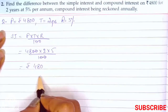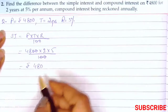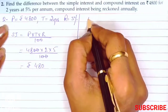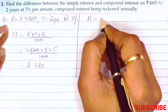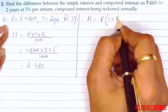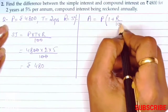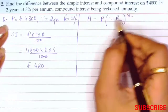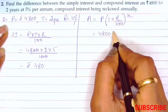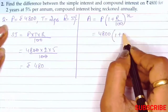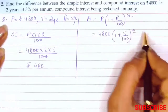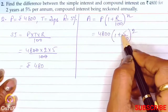Now we will find out the compound interest. The formula is A is equal to P bracket 1 plus R by 100 bracket close, to the power n. So P is 4800, bracket 1 plus rate is 5 by 100 and time is 2.